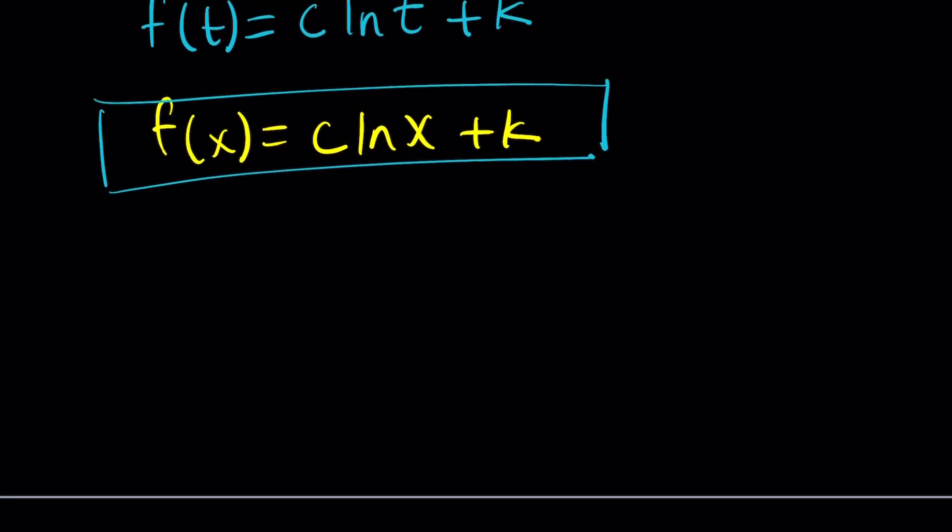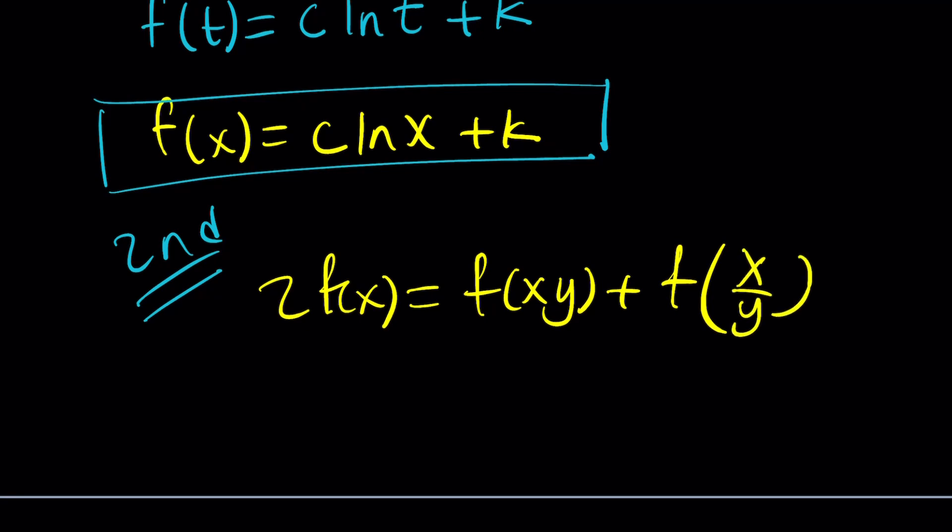Let's go ahead and take a look at another approach. Now, with the second method, first of all, my question is, is there a second method? Can we do it differently? Let's give it a try. All right. So we have 2f(x) = f(xy) + f(x/y). Remember, I told you x and y have to be positive real numbers, so I'm not allowed to use 0. Obviously, y can't be 0. And if I replace y with x, x can't be 0.